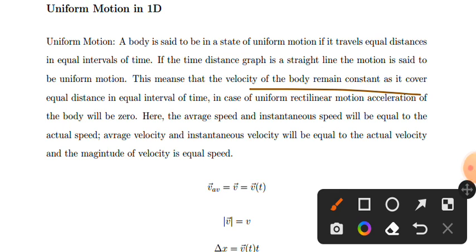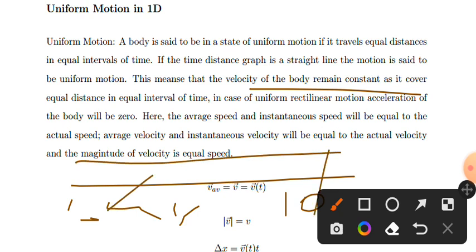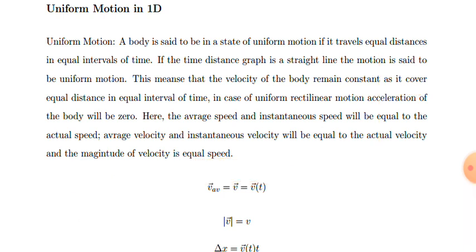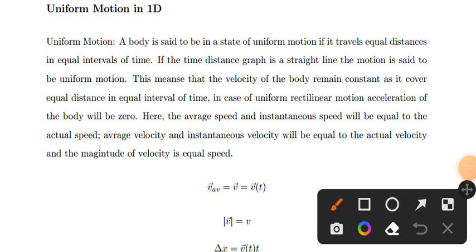For uniform motion, velocity remains constant. For example, if it's 10 meters per second here, it remains 10 meters per second throughout. Final velocity minus initial velocity equals the change in velocity, which is zero since velocity is constant. Therefore, in uniform motion, acceleration of the body will be zero.